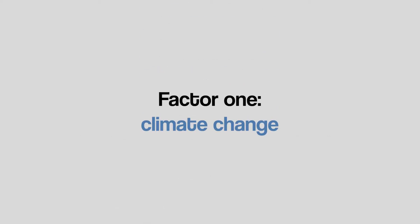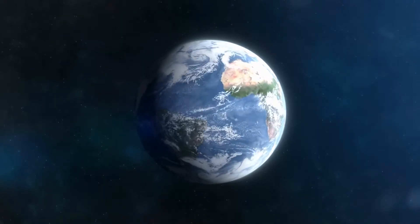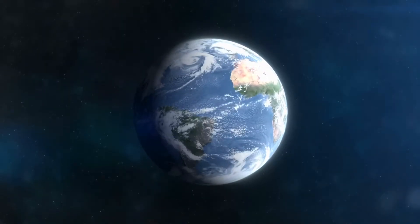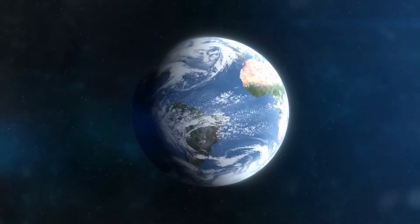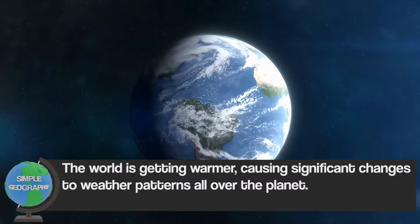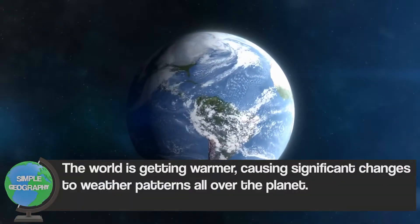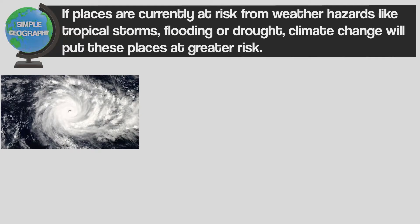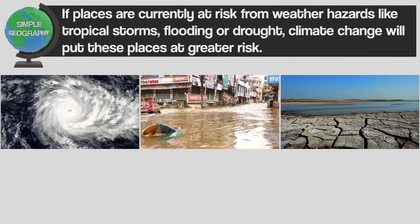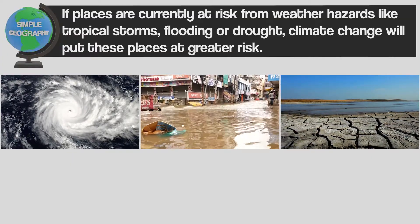The first factor that we'll look at is climate change. This is quite a big subject which will be covered in several future videos, but for now this is all you need to know. The world is getting warmer and it's causing significant changes to the weather patterns all over the planet. How does that link to hazard risk? Well, if places are currently at risk of weather hazards like tropical storms, flooding or drought, climate change is going to put these places at greater risk.